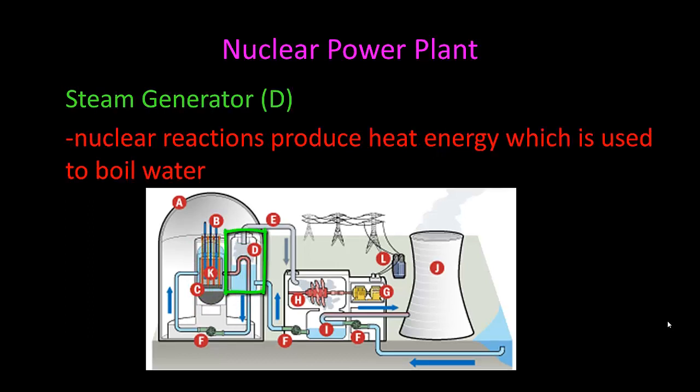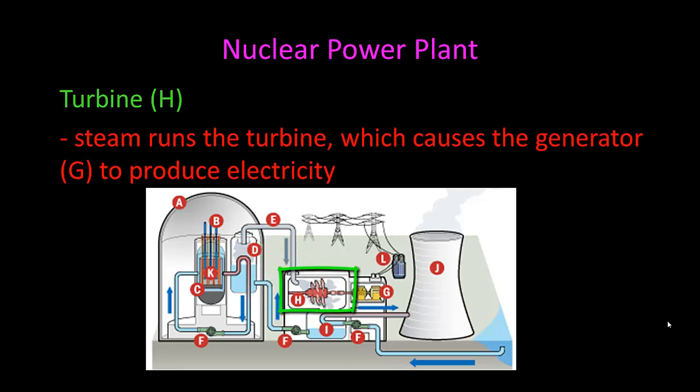The steam generator, here is D. Nuclear reactions produce a lot of heat energy, and that heat energy is used to boil water, and when it boils, it produces steam. And then the steam will turn this turbine here.